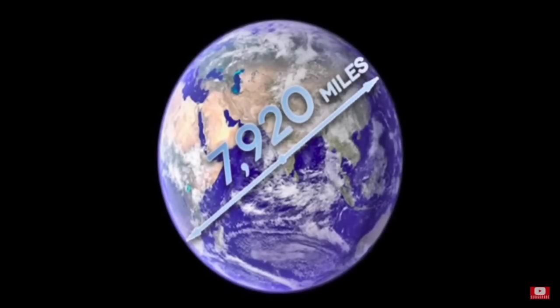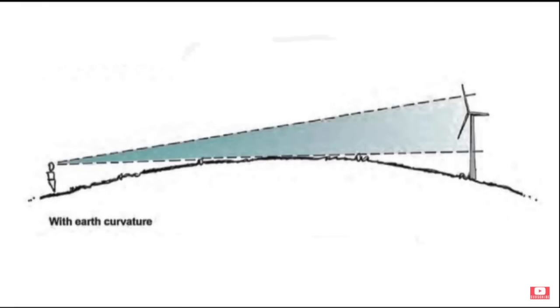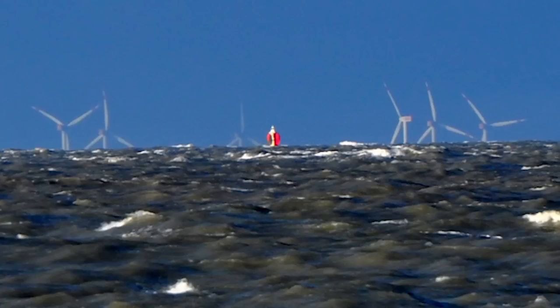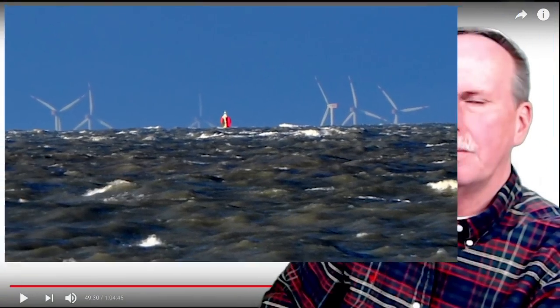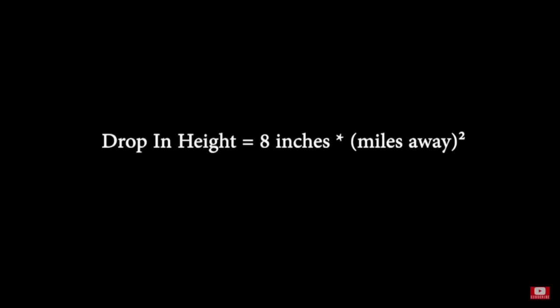The documentary tells us that the earth is a sphere with a diameter of nearly 8,000 miles. If the earth truly is a sphere this size, then objects should drop lower and lower in our vision the farther they travel away from us due to the curvature of the earth. And as you can see from these images, that's exactly what happens. The formula to calculate the drop in height is 8 inches multiplied by the number of miles away the object is squared.